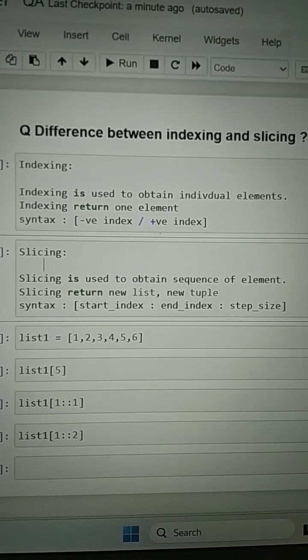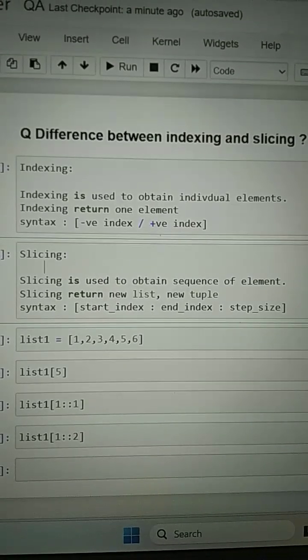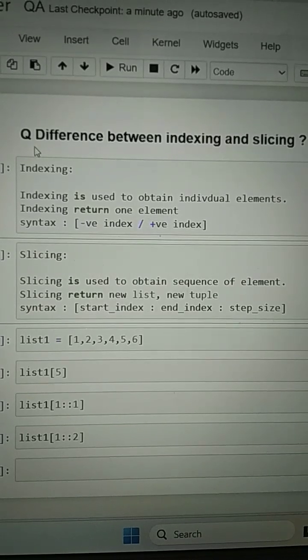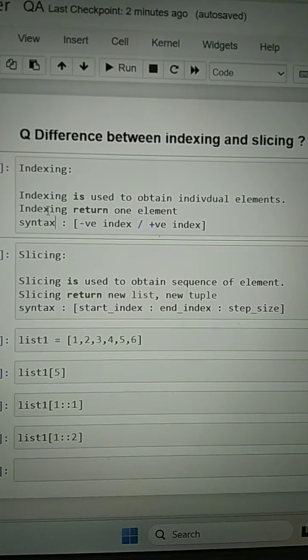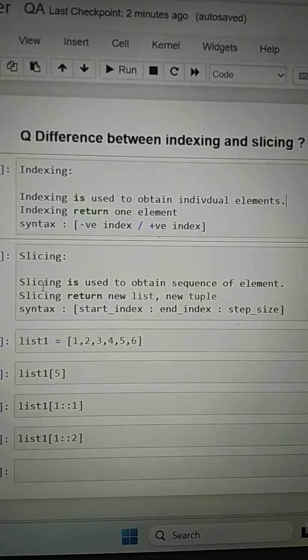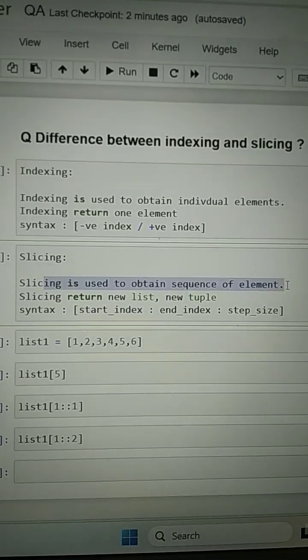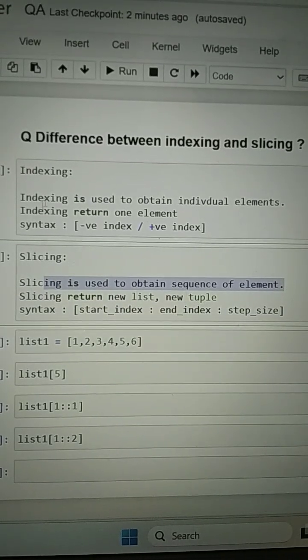Hello everyone, let's see the difference between indexing and slicing. This is also one of the important questions for interview purposes. Indexing is used to obtain individual elements, and slicing is used to obtain a sequence of elements. Indexing returns one element.